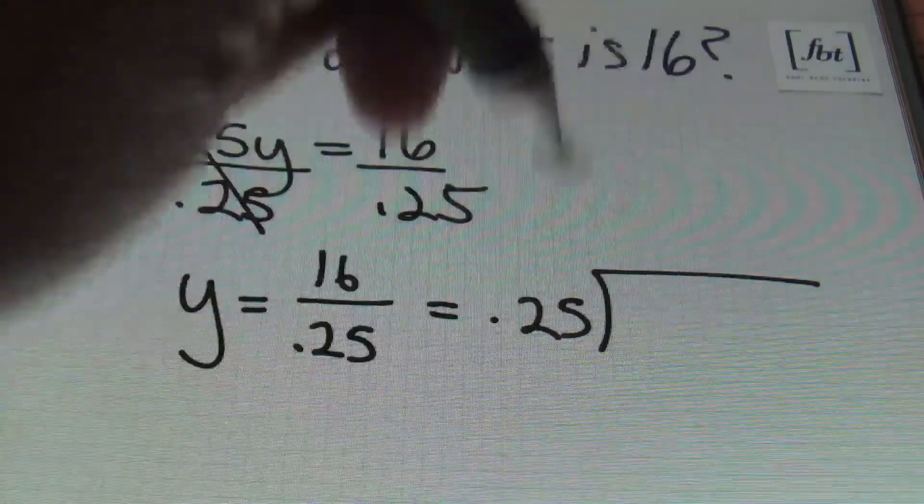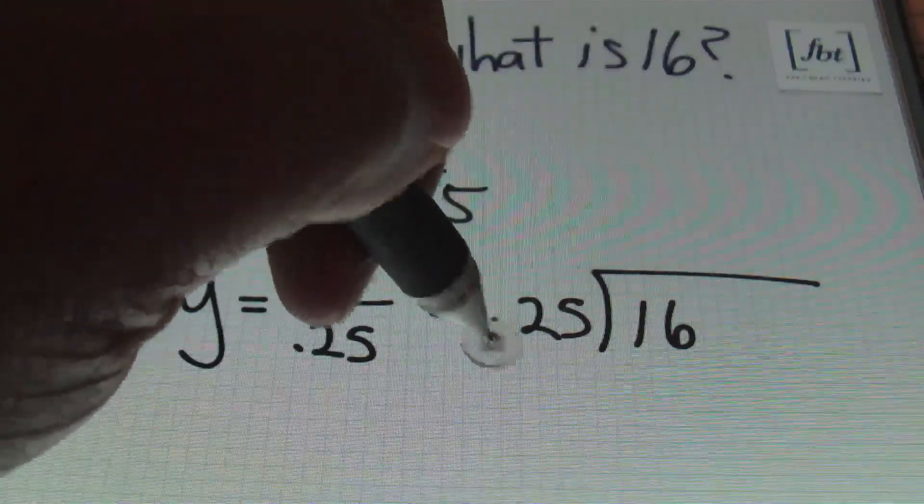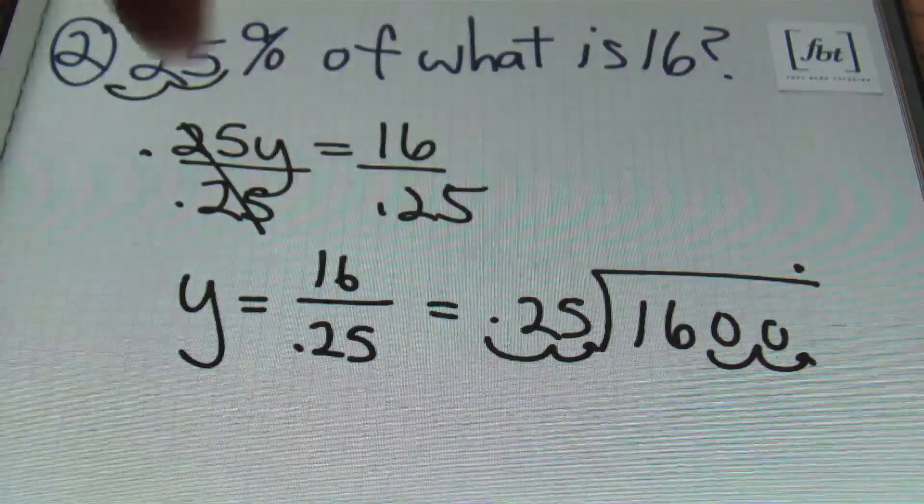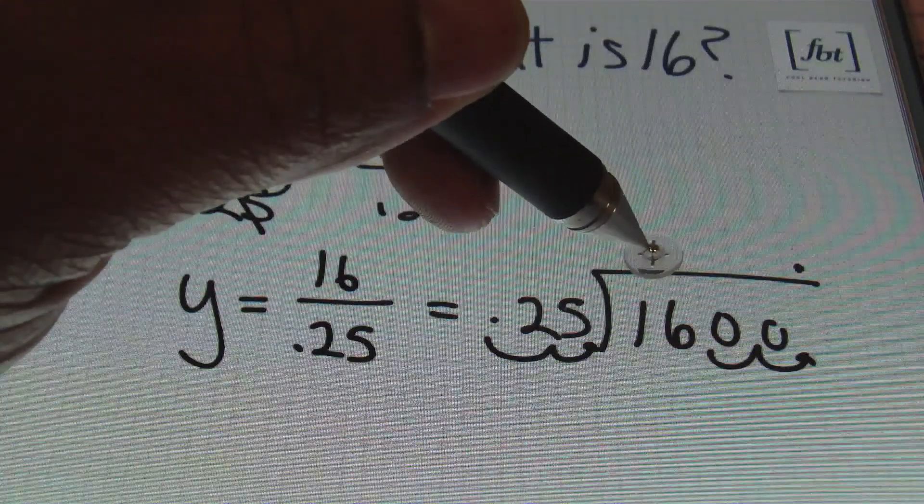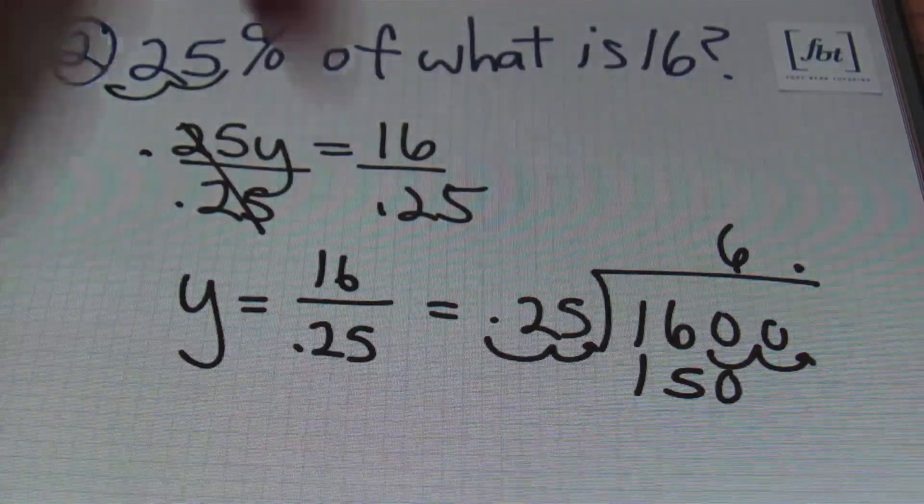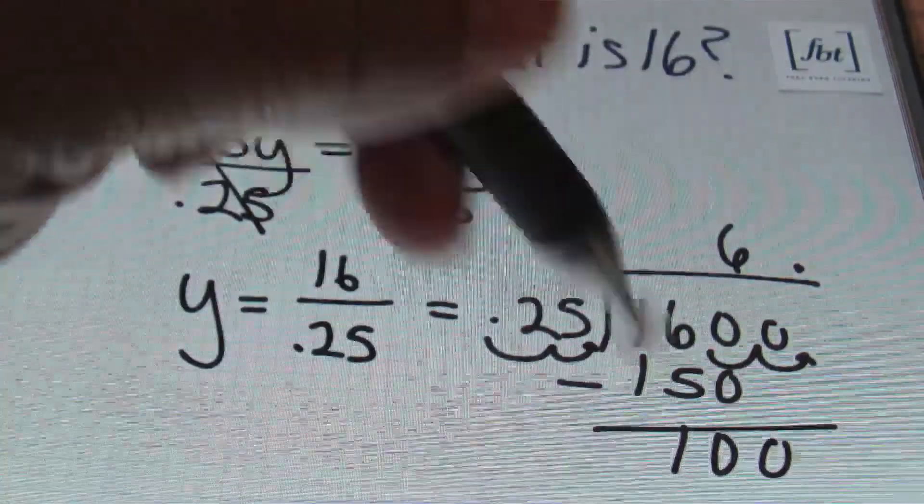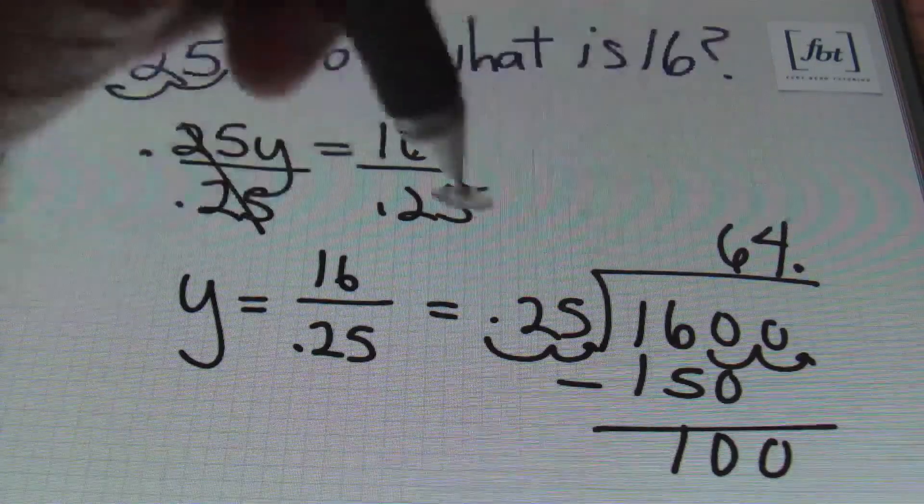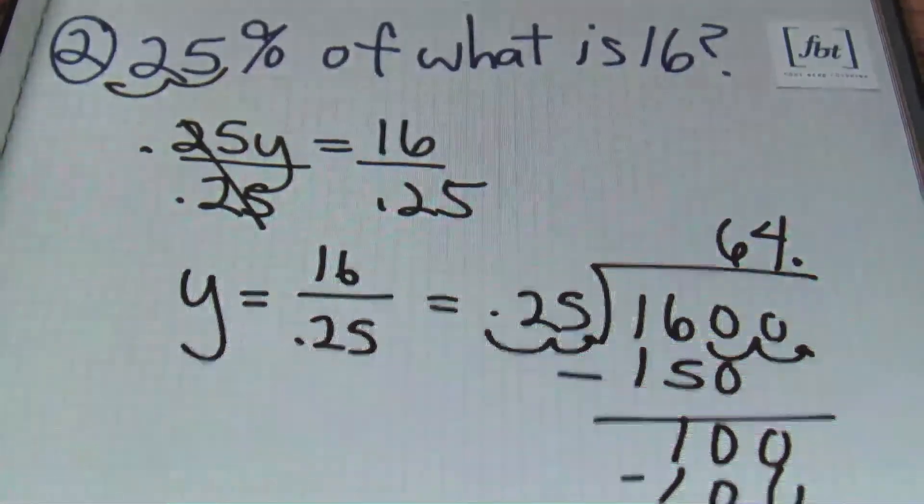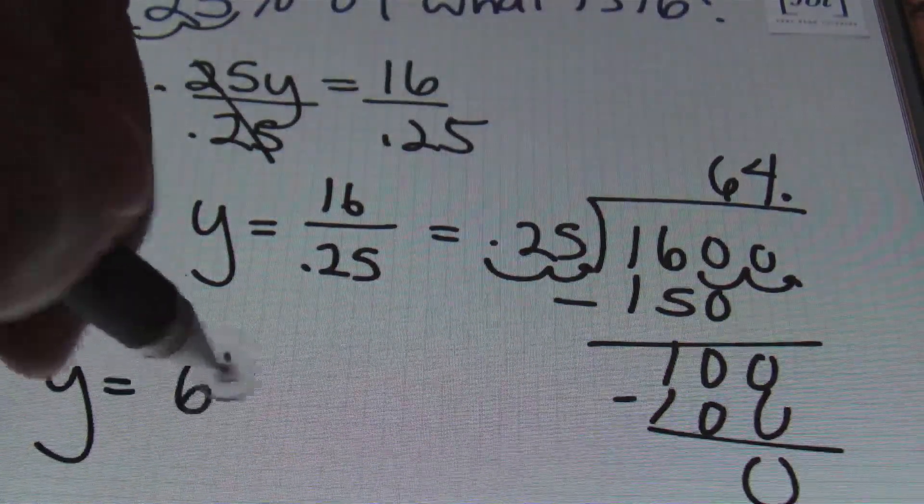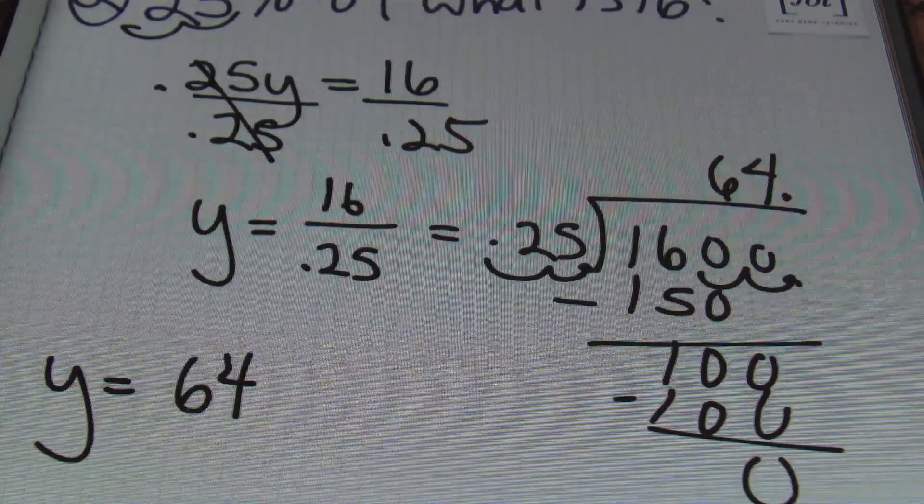My 0.25 will cancel out, and I'm bringing down my y, which equals 16 divided by 0.25. We're not going to be satisfied with this - we're going to go ahead and use a little long division here. I'll have 0.25 going into 16. I'm going to move the decimal over two places to the right, add zeros, bring my decimal up. And 25 won't go into 1, won't go into 16, but it'll go into 160 six times. So that's 150. Then I'll subtract. That's 100, and 25 goes into 100 four times. So 4 times 25 is 100, and that reduces to 0. So my answer is 64.